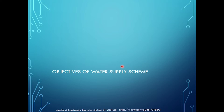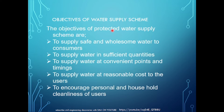The objectives of a protected water supply scheme are: to supply safe and wholesome water to the consumer — this is the basic objective of the water supply scheme — and to supply water in a sufficient quantity.